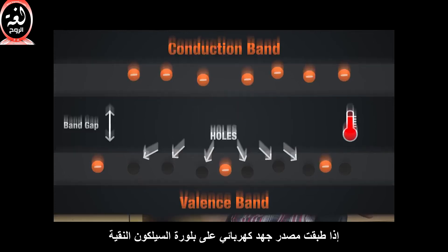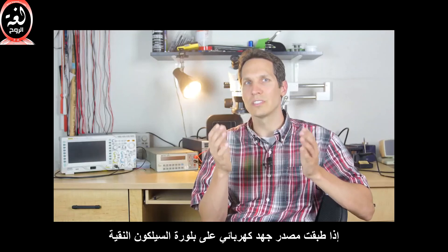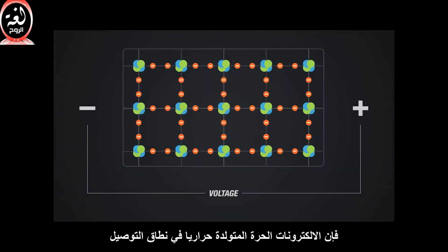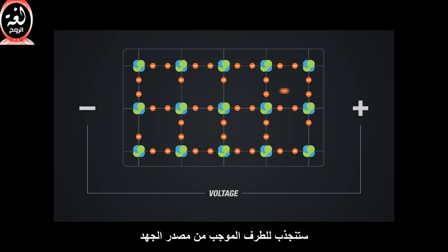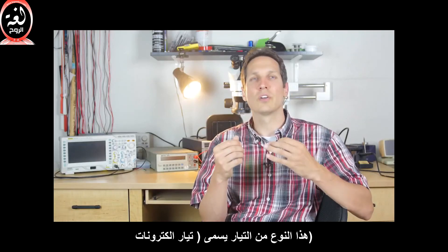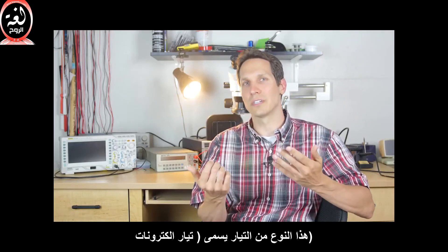If we put a voltage source across an intrinsic silicon material, the thermally generated free electrons in the conduction band will be attracted to the positive end of the voltage source. They will move towards the positive end, and this movement produces current in the material. This type of current is called electron current.